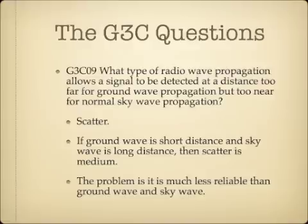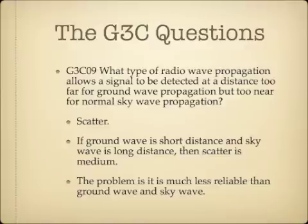What type of radio wave propagation allows a signal to be detected at a distance too far for ground wave propagation but too near for normal sky wave propagation? The answer is scatter. If ground wave is short distance and sky wave is long distance, then scatter is medium. If you're a little too far for ground wave and a little too close for sky wave, and the sound is weak and wavery, it's probably scatter. You can't communicate reliably with scatter.